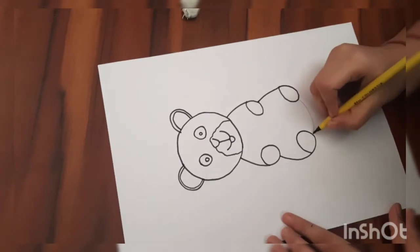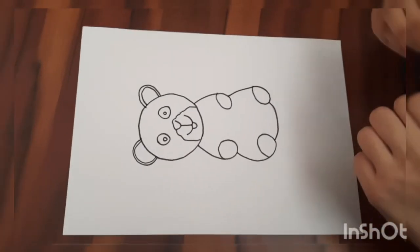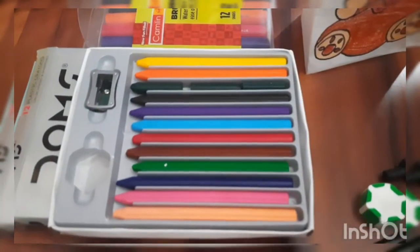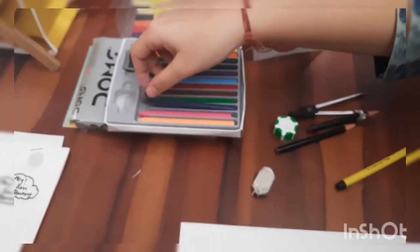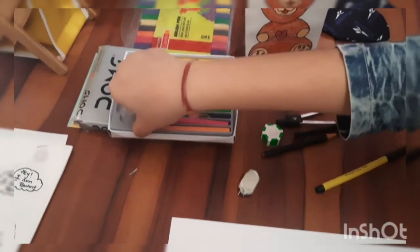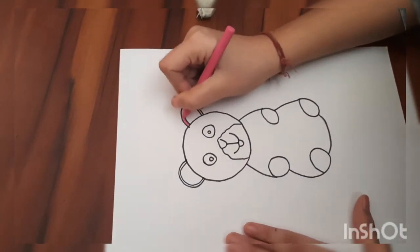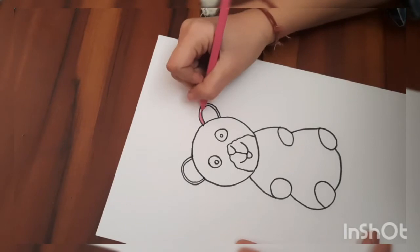Now our outline is completed. So now we will color this teddy bear with some color. You can use crayons. We will make this teddy bear colorful.